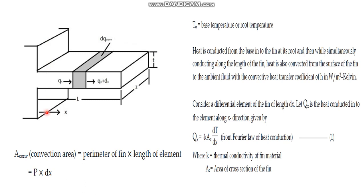Let us consider L be the length of the fin, T be the thickness, Ac be the cross-sectional area, and P be the perimeter of the fin. Then let T₀ be the temperature of the base and T∞ be the temperature of the surrounding into which the fin is projected.